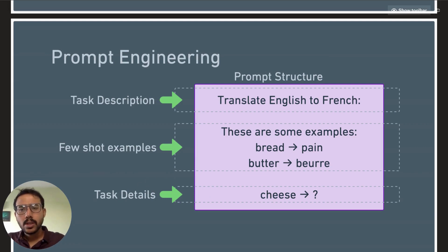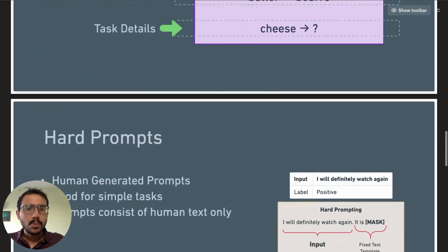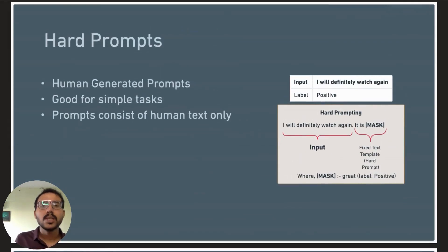So here you can see task description, few-shot examples, and task details. Prompting generally means giving the model extra clues to help it generate the desired output. This generally involves adding some text before or after the input text. It helps the model understand what it needs to do, whether it's for classification or generating text. This whole process is called hard prompting. These are human-generated prompts and hence consist of human-readable text only.